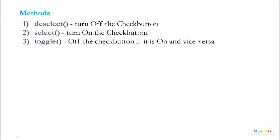The three important methods of the CheckButton Widget are Deselect, Select, and Toggle. Deselect turns OFF the CheckButton, and Select turns it ON. By calling the Toggle method, it switches between OFF and ON — turning OFF the CheckButton if it is ON, and vice versa.